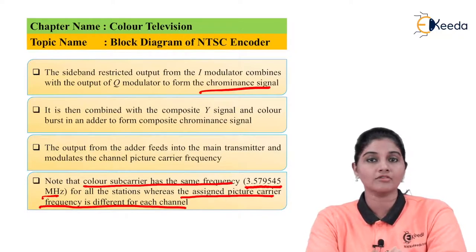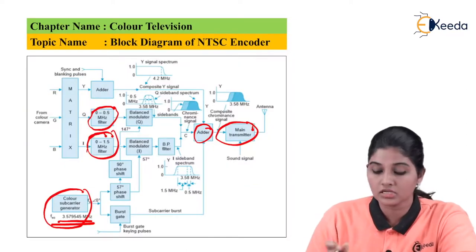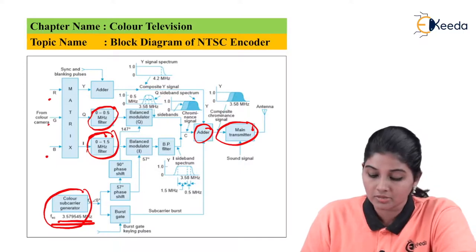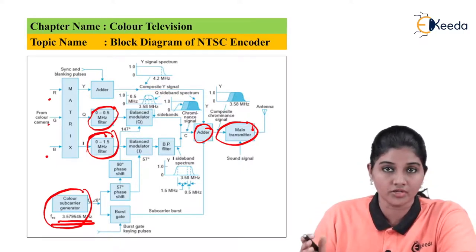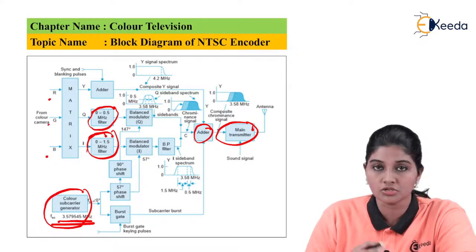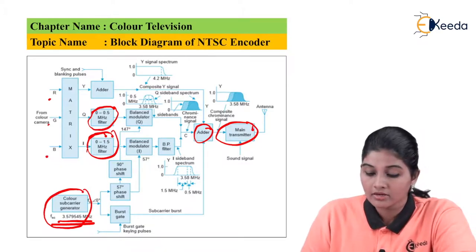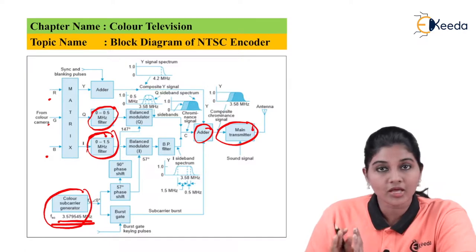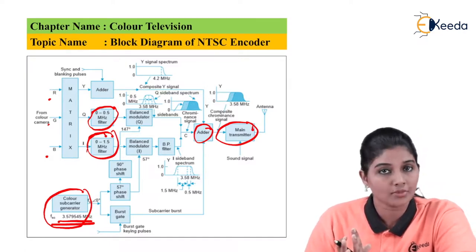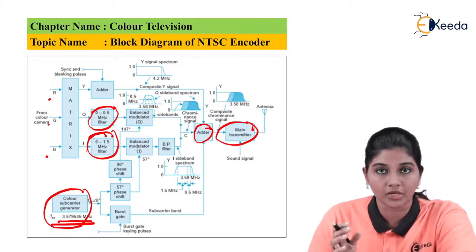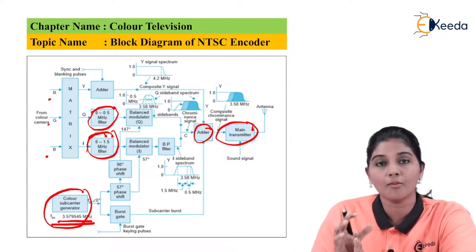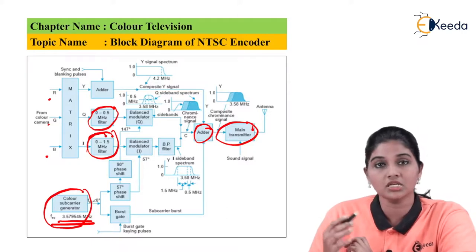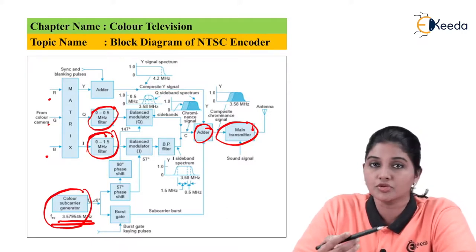In summary, in the NTSC encoder, three signals from the camera — red, green, and blue — are provided to a suitable matrix. The matrix provides two signals: I and Q, which are further frequency-restricted by filters. For the I signal, a filter of 0 to 1.5 MHz is used, and for the Q signal, a filter of 0 to 0.5 MHz is used. The signals are then provided to the balance modulator for frequency translation and suppression of the subcarrier. The color subcarrier generator provides the color subcarrier frequency of approximately 3.5 MHz, ensuring compatibility between monochrome and color systems. The color subcarrier is phase shifted by 57 degrees clockwise and then 90 degrees to create a phase difference between the I and Q signals.